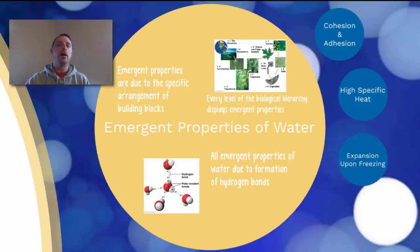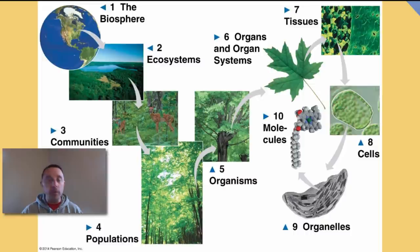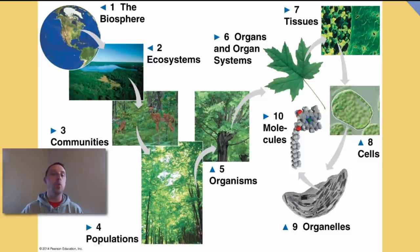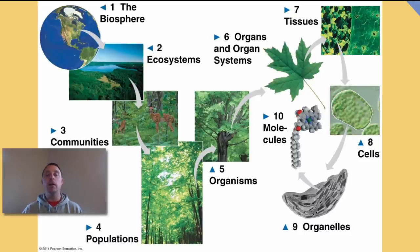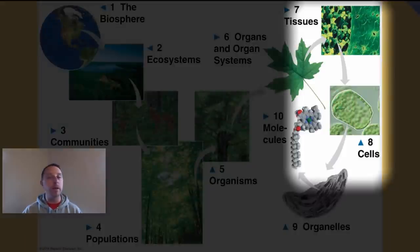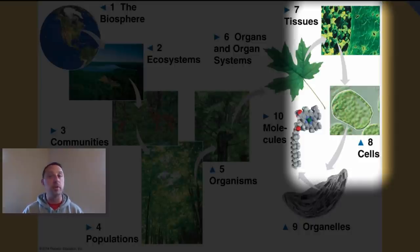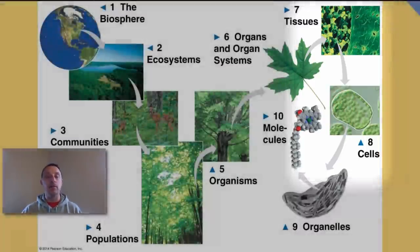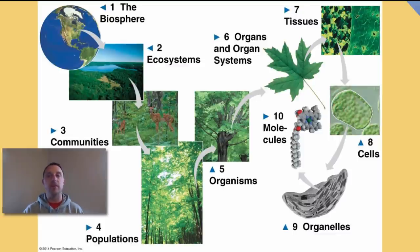What is an emergent property? An emergent property happens in every biological system when we have increasing layers of complexity. Whenever we take simple structures and put them together in certain ways, that resulting more complex structure has new properties not readily apparent in the simple structures. All of the levels shown here — when we go up one level — exhibit emergent properties. For example, if we take a cell, we can understand how a cell works, but once we put all those cells together into a tissue, the tissue will have new properties and behave in new ways that the individual cells did not.